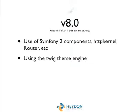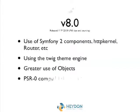We got the Twig theme engine — if anyone's taken a look at this, it's cool and really fast. Greater use of objects — we're using a lot more first-class objects. PSR-0 compliance means we can take things like Twig, Symfony, and Doctrine and put them into Drupal without conflicts. We make use of namespaces and all the latest things that PHP 5.3 gives us.